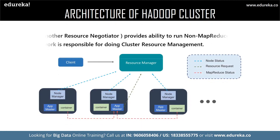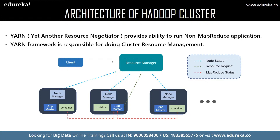Now let us discuss about YARN — Yet Another Resource Negotiator. YARN consists of the following elements: Node Manager, App Master, and Container. The Node Manager is a Java utility that runs as a separate process from the web logic server, allowing you to perform common operations for a managed server regardless of its location with respect to the administration server. The App Master is responsible for negotiating resources between the Resource Manager and Node Manager. The Container is a collection of reserved resources allocated from the Resource Manager to work on the task assigned by the Node Manager.